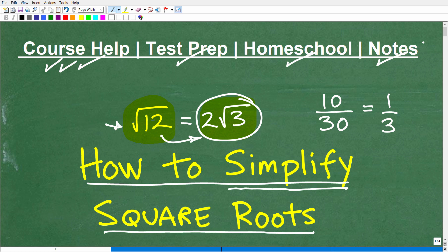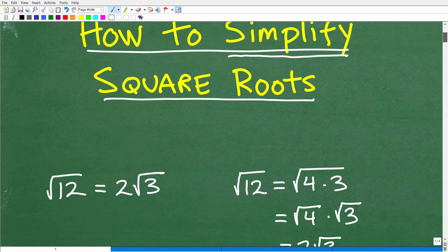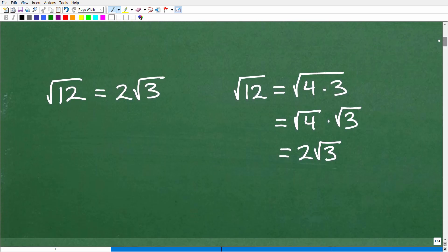Alright, so let's get into this and learn how to simplify square roots. And we'll go ahead and start with this first problem. I'm going to show you exactly how we went from the square root of 12 to 2 times the square root of 3. So what you need to first understand is that when we have a square root of a number, this number that's underneath the square root, we can break this up in its factors.